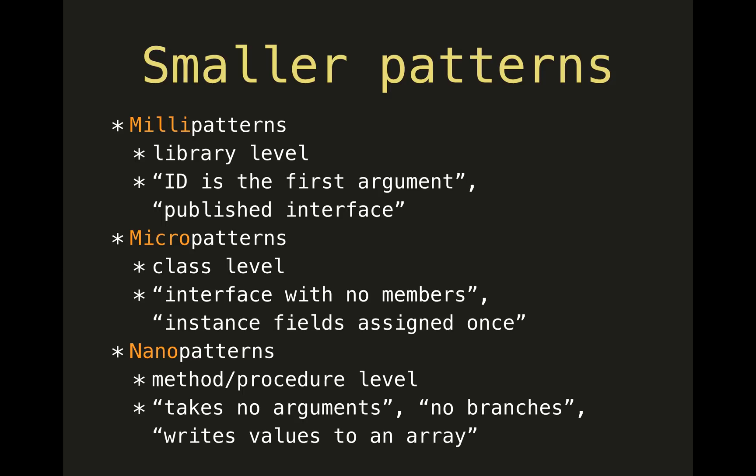Micro patterns exist at the class level and make observations about the nature of a class — for instance, noting that a class is abstract with no members, used only to couple things together without the reuse aspect of subclassing. Or a class whose instance fields are assigned once during initialization and never changed. Nano patterns exist at the method or procedure level: a method that takes no arguments or returns nothing, a method with no if-statements that goes straight from beginning to end, or one that reads or writes values to an array.